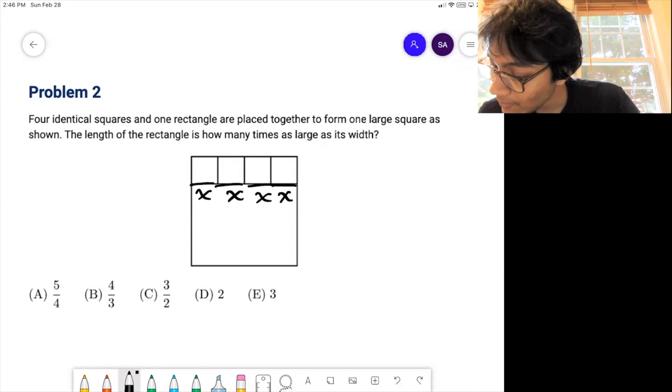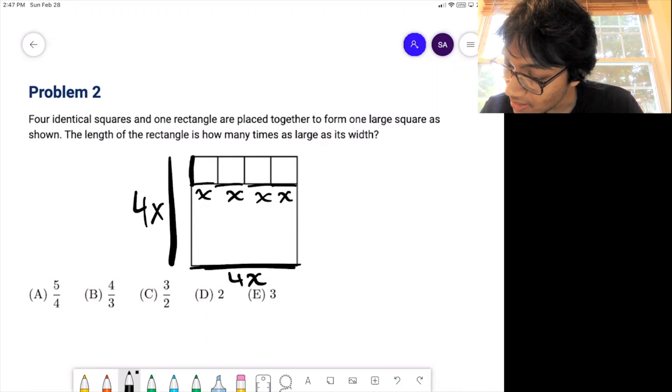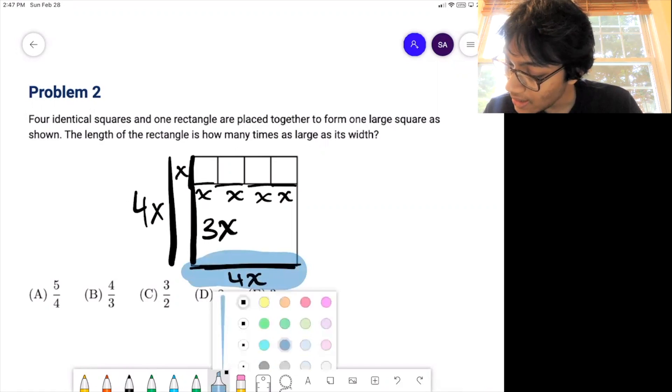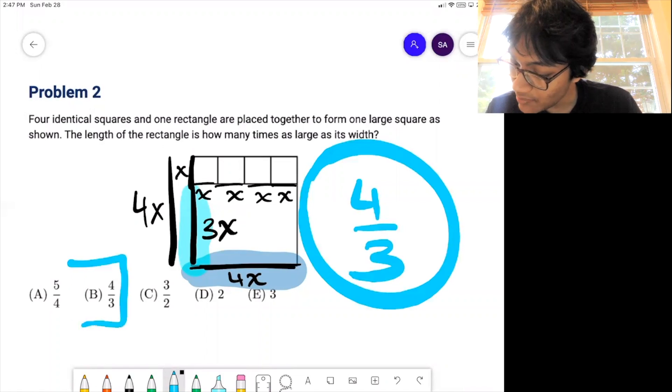So these are all x, stands to reason that this is 4x. And since this is a square, this whole thing is a square, that means this also has to be 4x. But this is a smaller square, so this has to be x. So 4x minus x, well that's going to give us a nice 3x for this width. And so now we know that the length is 4x and the width is 3x for this rectangle. And so our ratio is going to be 4 to 3 for a nice choice B.